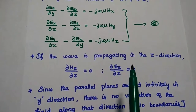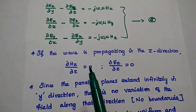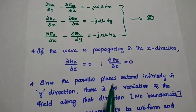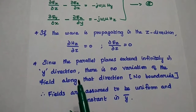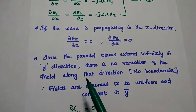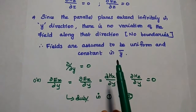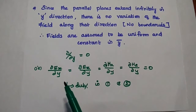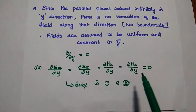Since the wave is propagating in the z direction, the variation of Hz and Ez in the z direction becomes zero, so ∂Hz/∂z = ∂Ez/∂z = 0. Also, since the parallel planes extend infinitely in the y direction, there is no variation of field components along y — the fields are uniform and constant in that direction. Therefore, derivatives with respect to y are all zero: ∂Ex/∂y = ∂Ez/∂y = ∂Hz/∂y = 0.